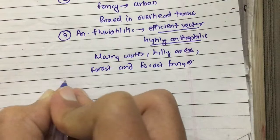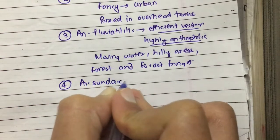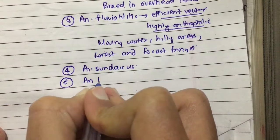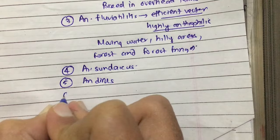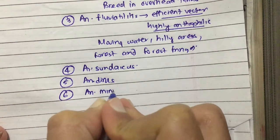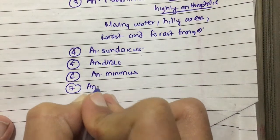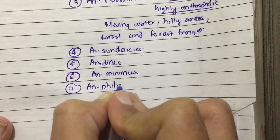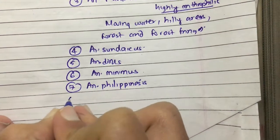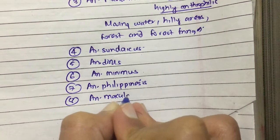The fourth type is Anopheles sundaicus, fifth is Anopheles dirus, and others include Anopheles minimus, Anopheles penensis, and Anopheles maculatus. All these Anopheles species are responsible for the transmission of malaria.